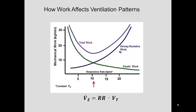Contrast this with the amount of work to overcome the airway resistance. At very low respiratory rates with these high tidal volumes, the airflow back and forth between the lungs and the atmosphere becomes small because you're taking nice, slow, deep breaths. The airflow is smooth and slow, so it moves through the airways more easily.